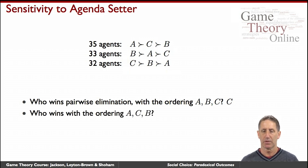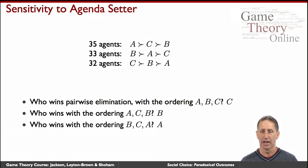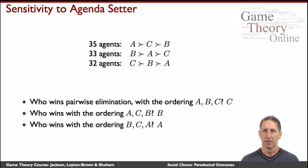What happens with another ordering like ACB? In that case B would be the winner. And with the third ordering BCA, A would be the winner. So it's a little disconcerting that the same voting scheme, merely by deciding the order in which you run it, leads to very different results.